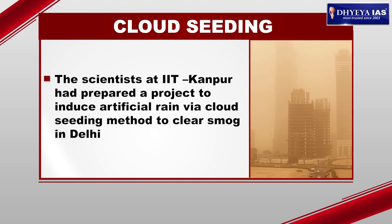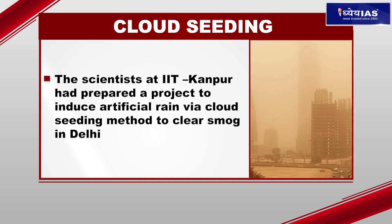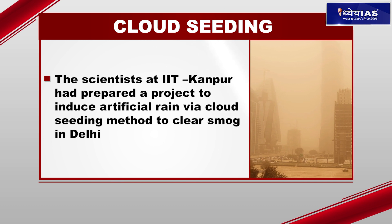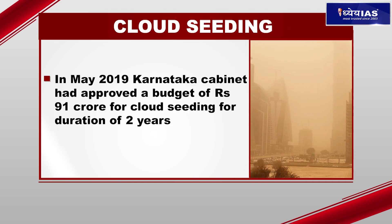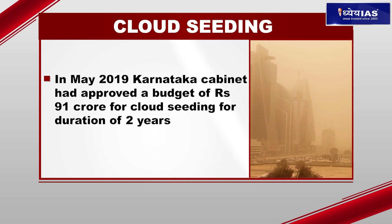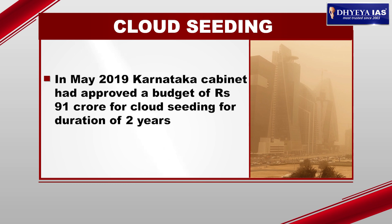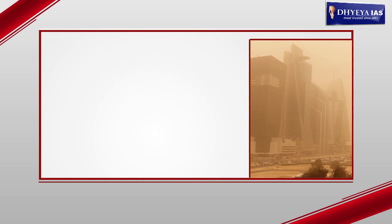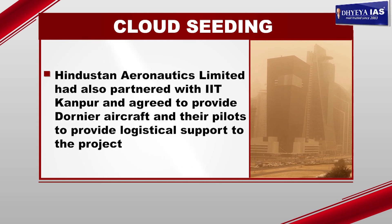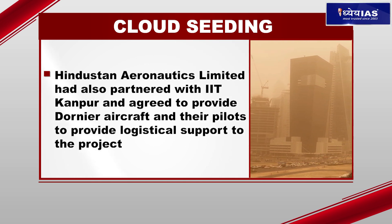Some private companies also offer cloud seeding services. Scientists at IIT Kanpur had prepared a project to induce artificial rain via cloud seeding to clear smog in Delhi. In May 2019, the Karnataka Cabinet approved a budget of Rs 91 crore for cloud seeding for a duration of two years, including two aircraft spraying chemicals on moisture-laden clouds. Hindustan Aeronautics Limited also partnered with IIT Kanpur, agreeing to provide Dornier aircraft and pilots for logistical support.